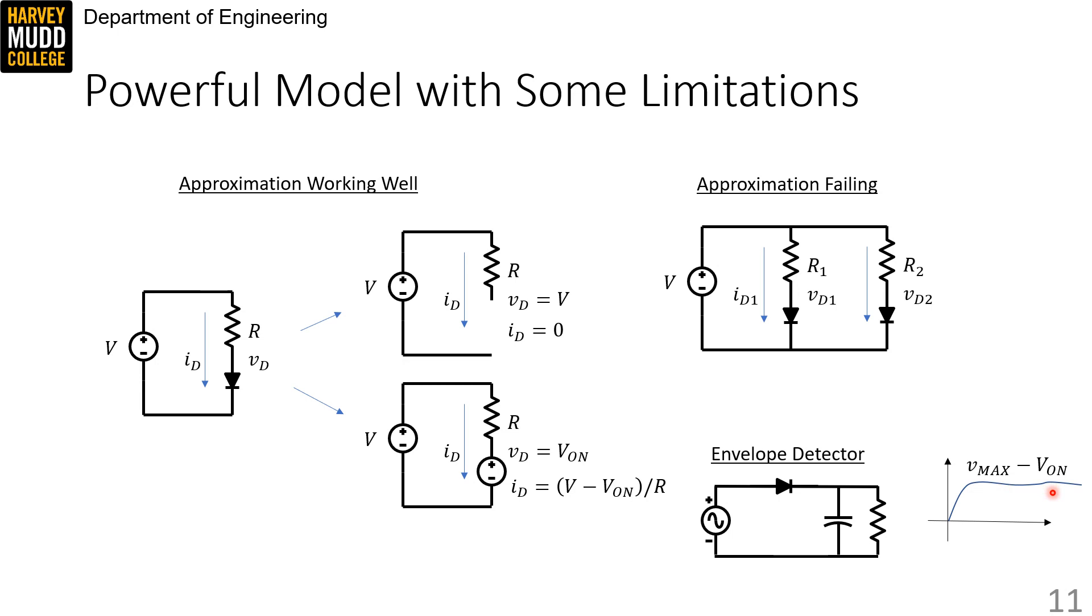So it's often said that envelope detectors exhibit output ripple because that voltage fluctuates slightly in between the peaks of input sine waves. And this resistor might be designed into an envelope detector deliberately to allow the detector to notice when the amplitude of the input goes down, or it might represent a load circuit.